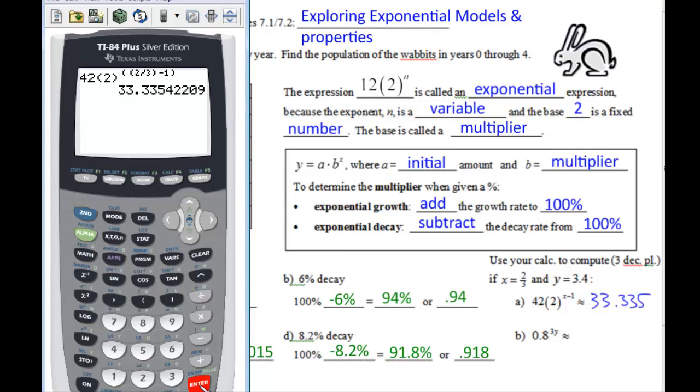B. If we have 0.8 raised to the 3 times 3.4, we have this on the calculator, 0.103 rounded. So just some quick calculator practice.